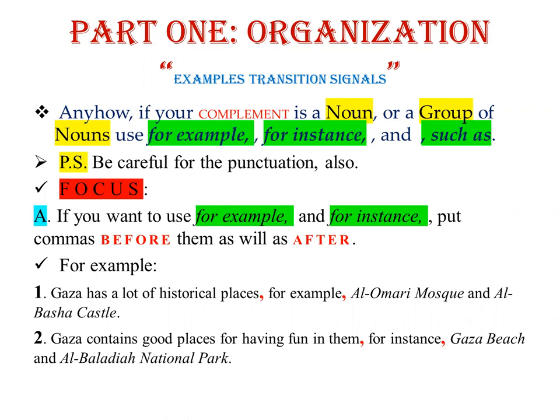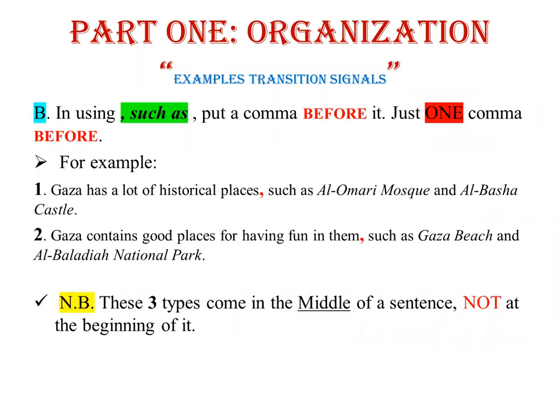That is the main difference between the first type and the second. For 'such as,' it is really important: put only one comma before it. Example: 'Gaza has a lot of historical places, such as Al-Omari Mosque and Al-Basha Castle.' Another example: 'Gaza contains good places for having fun, such as Gaza Beach and Al-Baladiyya National Park.'